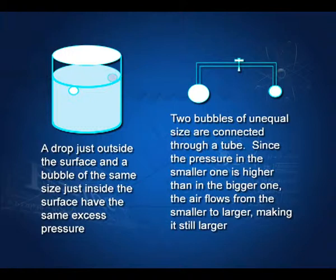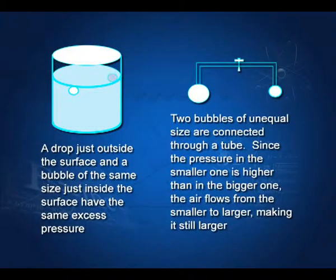If you have two bubbles, one smaller and one larger, and bring them into contact by a nozzle and open the cock — the pressure inside the smaller bubble is higher because it is inversely proportional to radius. So air will flow from the smaller bubble into the larger one; the larger bubble will grow and the smaller bubble will actually become smaller.